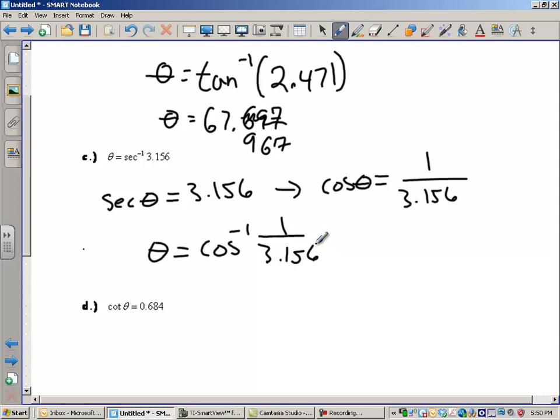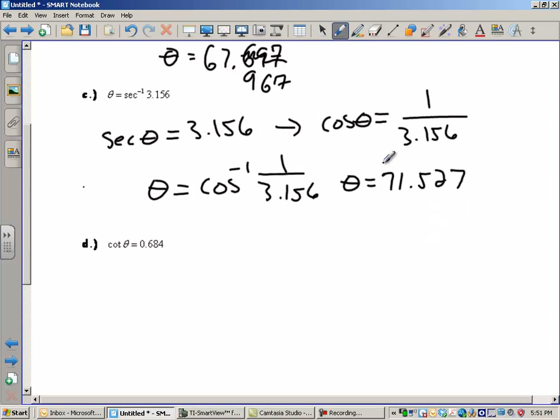So, my answer for this is going to be theta equals the arc cosine of 1 over 3.156. And I'm just going to do this on my calculator here. Arc cosine of 1 divided by 3.156. And that is making sure I am in, I didn't do 1 divided by. 71.527. You can verify that on your own calculator. And I think Mr. Monahan gets our last example.